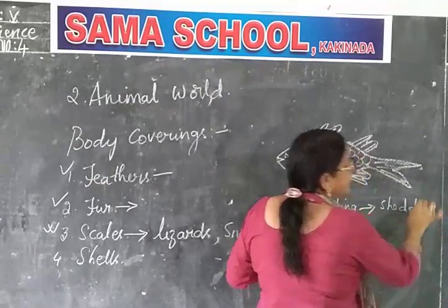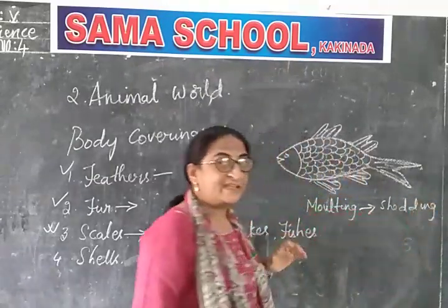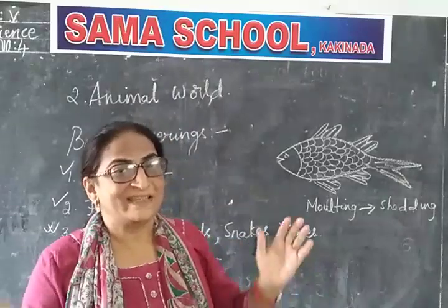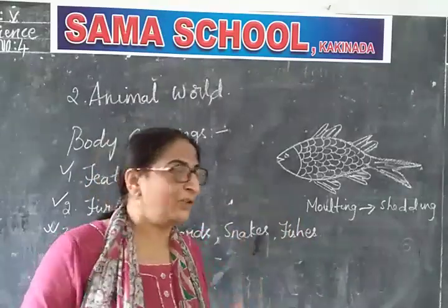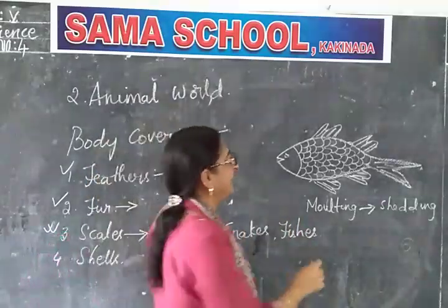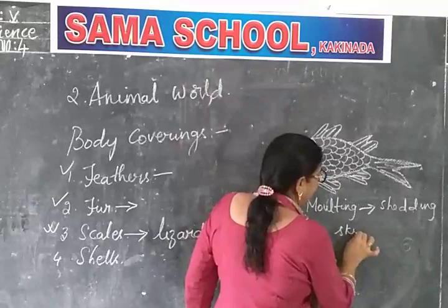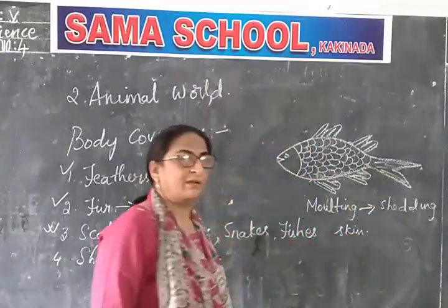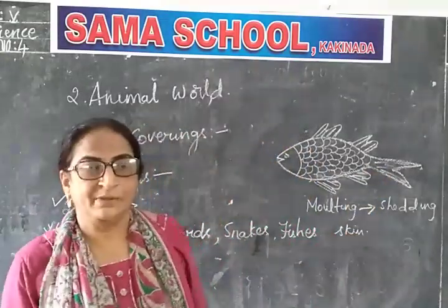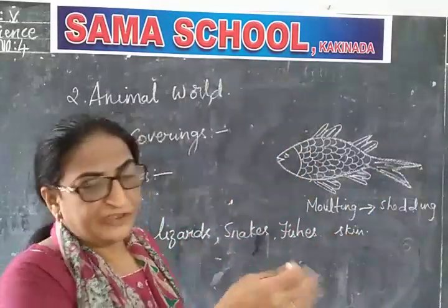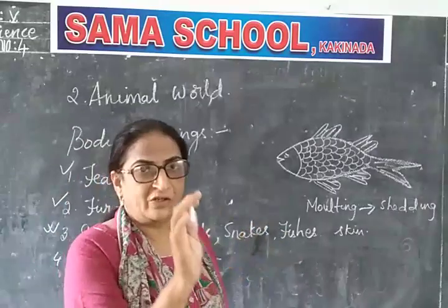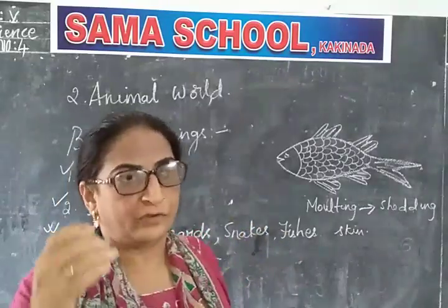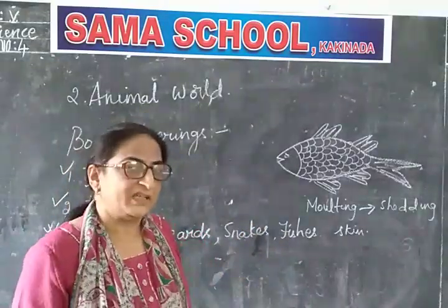You know snakes — they shed out their old skin and get new skin. Now how does this shedding of skin happen? For example, you have finished your first standard, second, third, fourth, and now you have come to fifth standard.